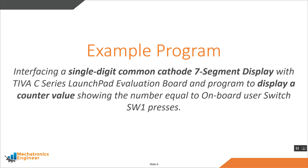Let's take an example program as a case study for interfacing the seven segment display. We will interface a single digit common cathode type seven segment display with the TIVA C-Series LaunchPad evaluation board, and write a program that displays a counter value equal to the number of presses on the onboard user switch. Let's now select the GPIO port for interfacing the seven segment display.